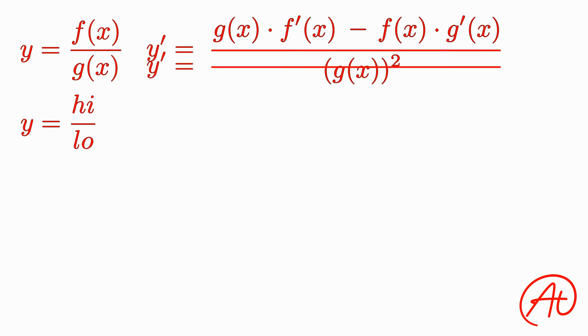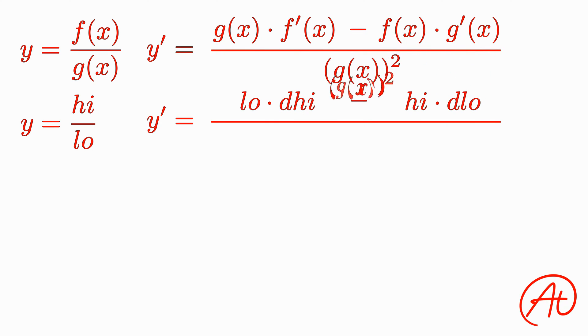With this, we can then rewrite the Quotient Rule in a way that is much easier to remember. This is read as low d high minus high d low, all over low squared, where d high means the derivative of the high function, and d low means the derivative of the low function.